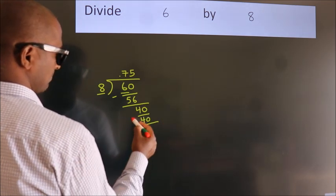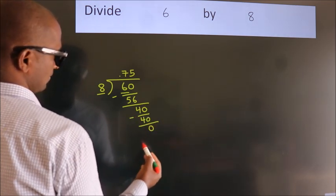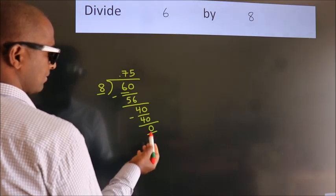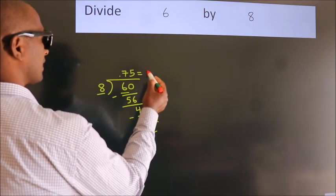Now we subtract. We get 0. Here we got remainder 0, so this is our quotient.